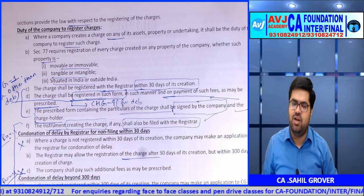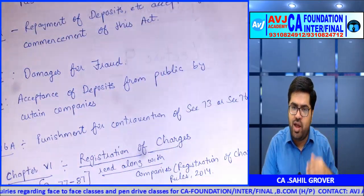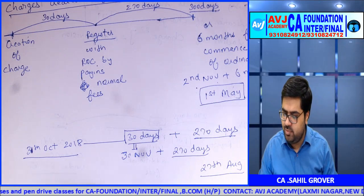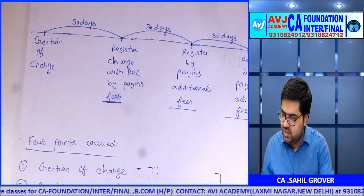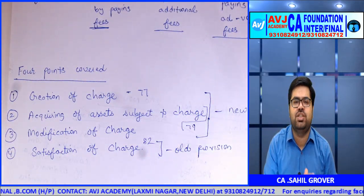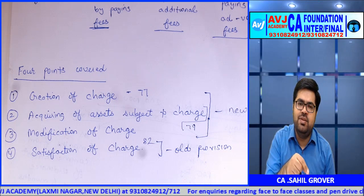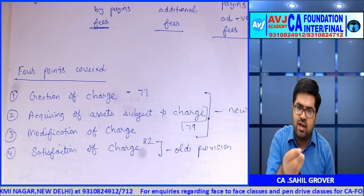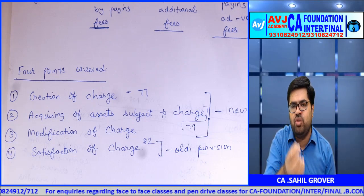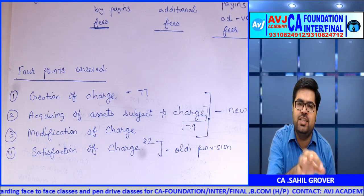Here begins the important amendment. If you remember the old system, the chapter covers four broad concepts: creation of charge, acquisition of assets already having a charge, modification of charge, and satisfaction of charge. The old registration timings were the same for all four — Registrar had to be informed of all four events.